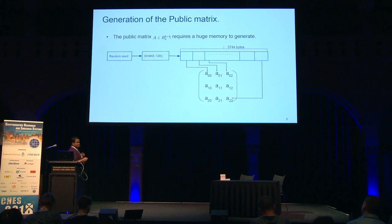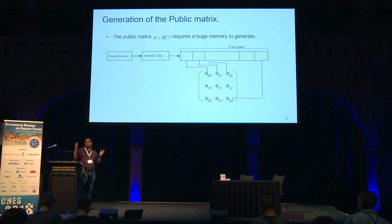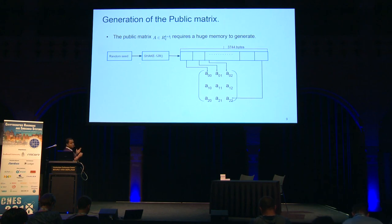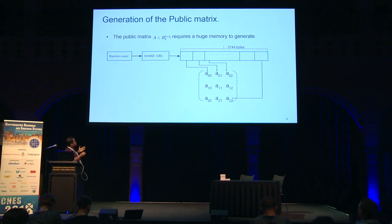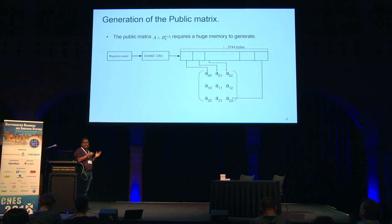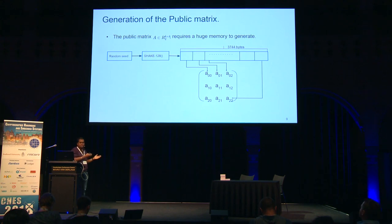In the reference implementation of Saber, we first need to generate a public matrix A, which is a collection of nine polynomials. We generate a random seed, run SHAKE-128, and produce a huge array of 3.8 kilobytes of pseudo-random bytes, then generate each polynomial one by one. But this 3.8 KB array is huge, and for platforms like Cortex-M0 with only 8 KB of RAM, it is prohibitively large — we cannot even fit it there.